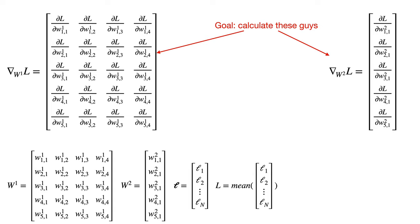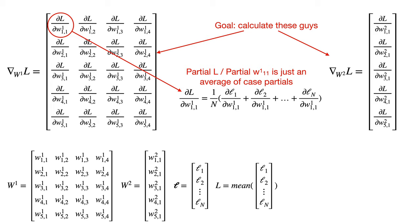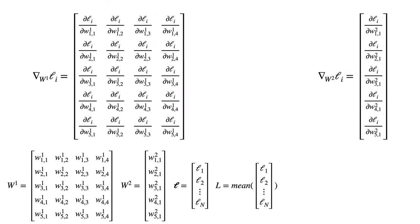That is, we want to know the derivative of the total log loss, capital L, with respect to W111. More generally, if we can determine the gradient of L with respect to all the weights in W1 and all the weights in W2, then we can make a gradient step, updating every weight simultaneously. The first thing to recognize is that, since capital L is just the average of the individual log losses, and the individual log losses are independent of each other, the gradient of capital L with respect to W1 is just the average of the gradient of L1 with respect to W1, L2 with respect to W1, and so on. And the gradient of capital L with respect to W2 is just the average of the gradient of L1 with respect to W2, L2 with respect to W2, and so on.